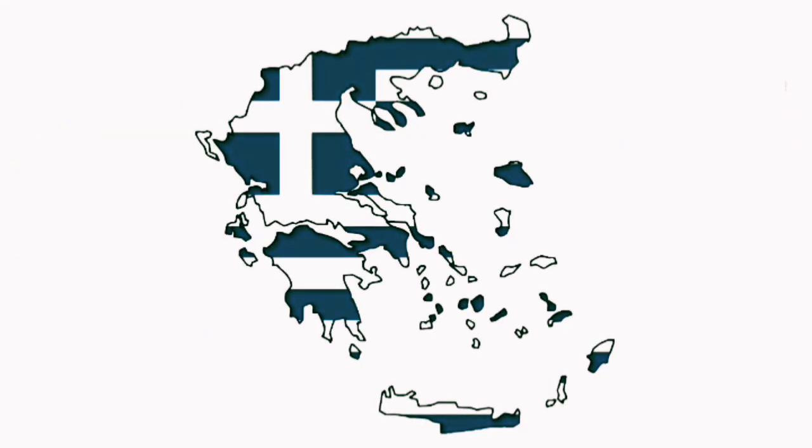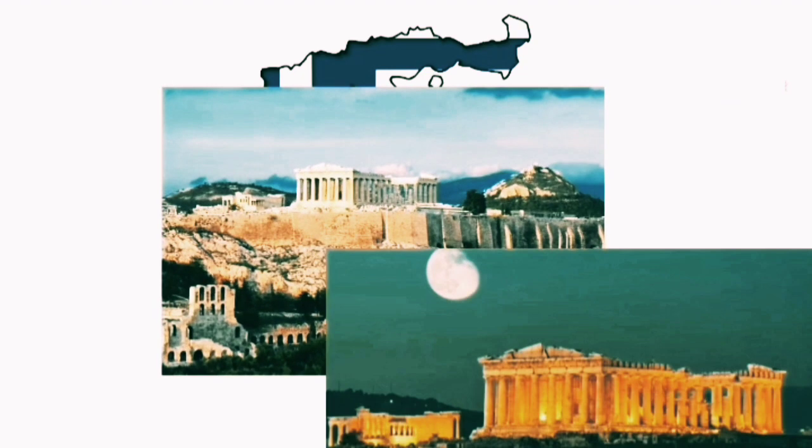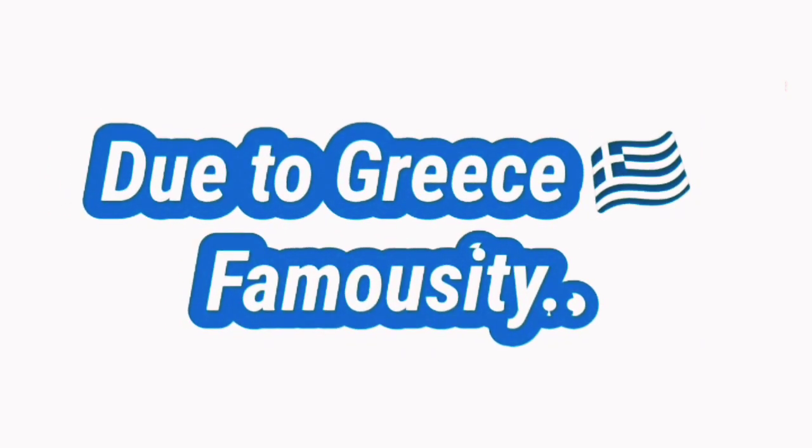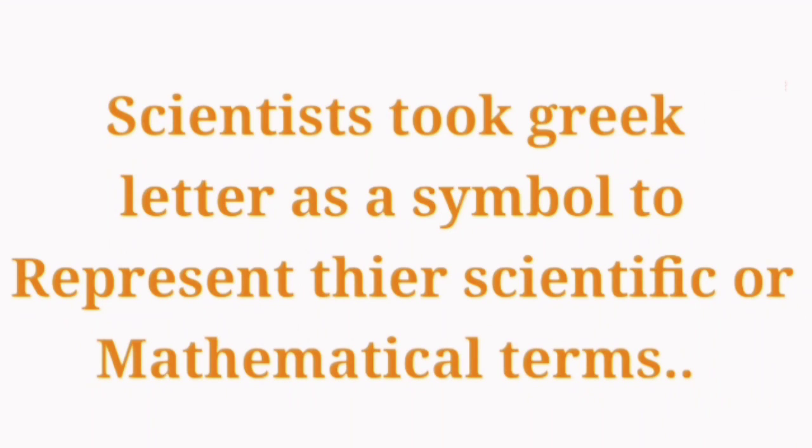Greece has been a very important country in Europe. Because it has rich ancient culture, heritage, and development of science there. And due to its legacy, scientists took Greek letters to symbolize their scientific terms and formulas or units.